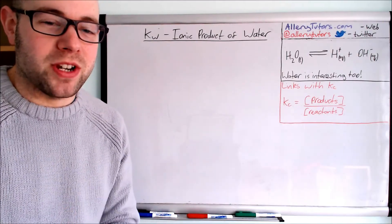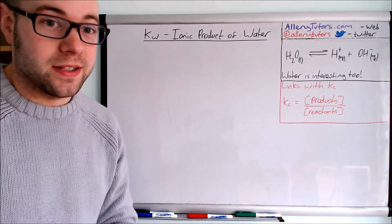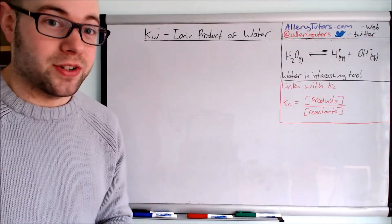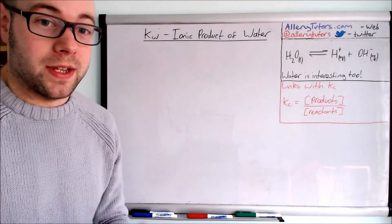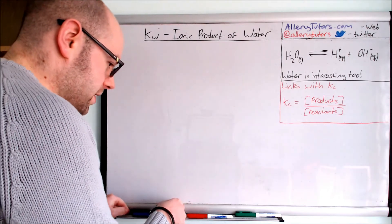The Kc expression is the concentration of products divided by the concentration of reactants. So if we take this equation and shove it into our Kc expression, we can work out the expression for the ionic product of water.